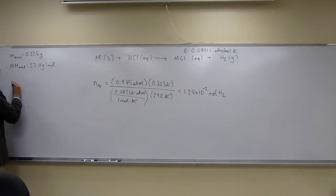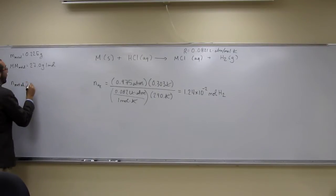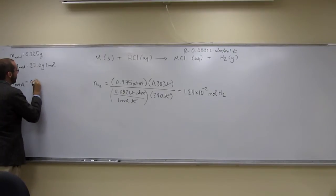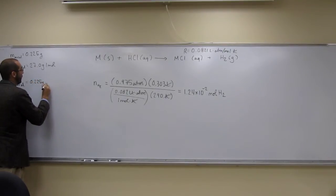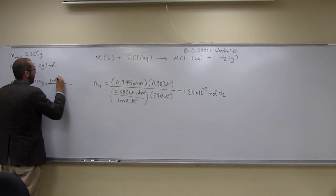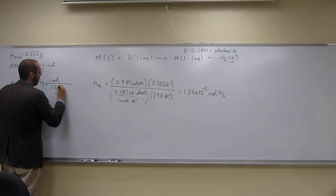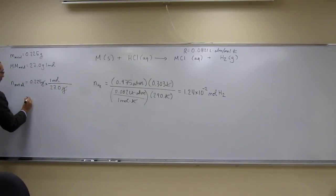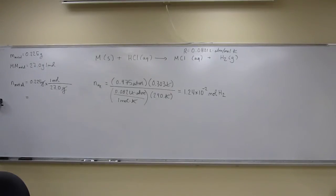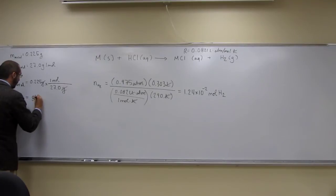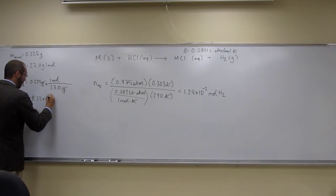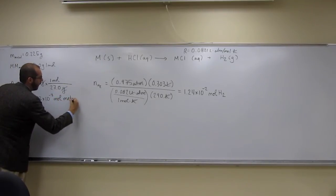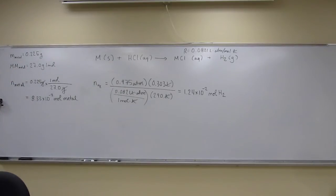Let's find the number of moles of the metal. We have 0.225 grams of the metal, and the molar mass is 27.0 grams per mole. So: 0.225 g ÷ 27.0 g/mol = 8.33 × 10⁻³ moles of the metal.